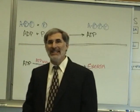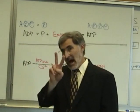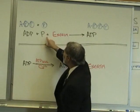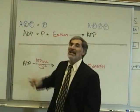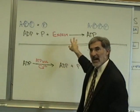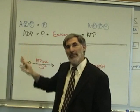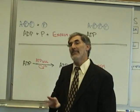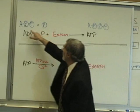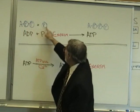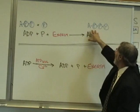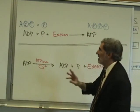What is ADP? Adenosine diphosphate — it has two phosphates. By attaching a third phosphate onto adenosine diphosphate, a high energy nucleotide is formed called ATP, adenosine triphosphate. Adenosine diphosphate plus a third phosphate forms this high energy nucleotide called adenosine triphosphate.